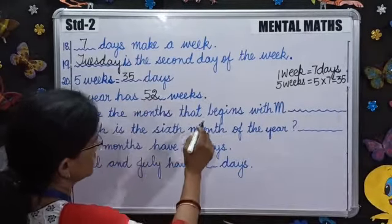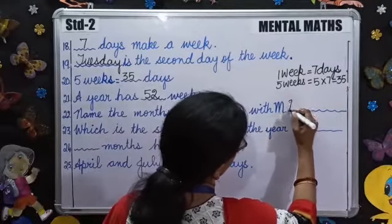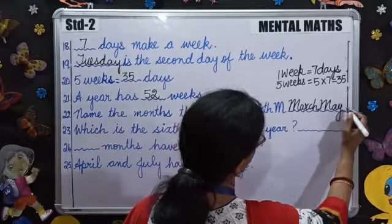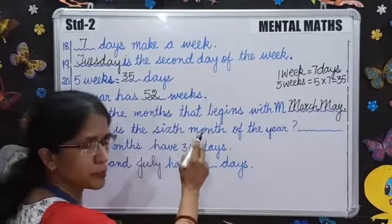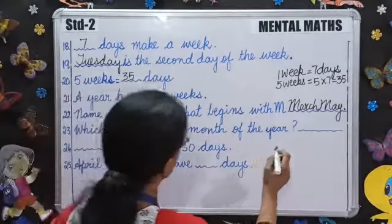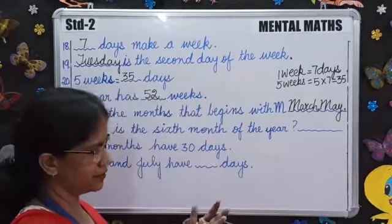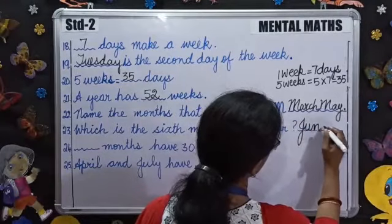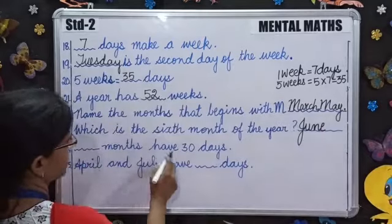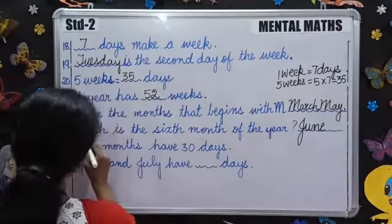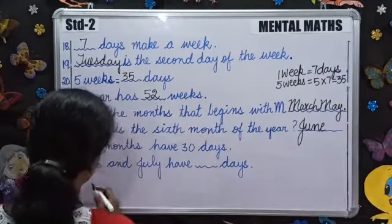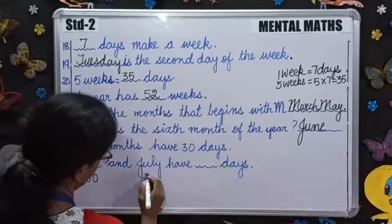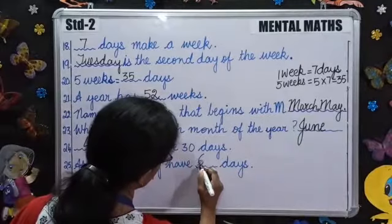Name the months that begin with M: March and May. Which is the 6th month of the year? January, February, March, April, May, June. So June is the 6th month of the year. How many months have 30 days? 4 months have 30 days. April has 30 days and July has 31 days. Together it is 61 days.